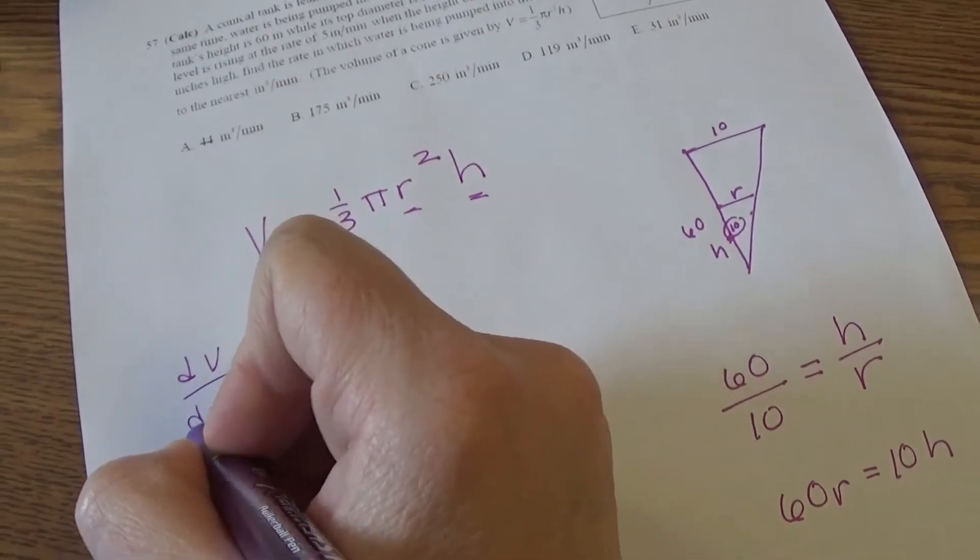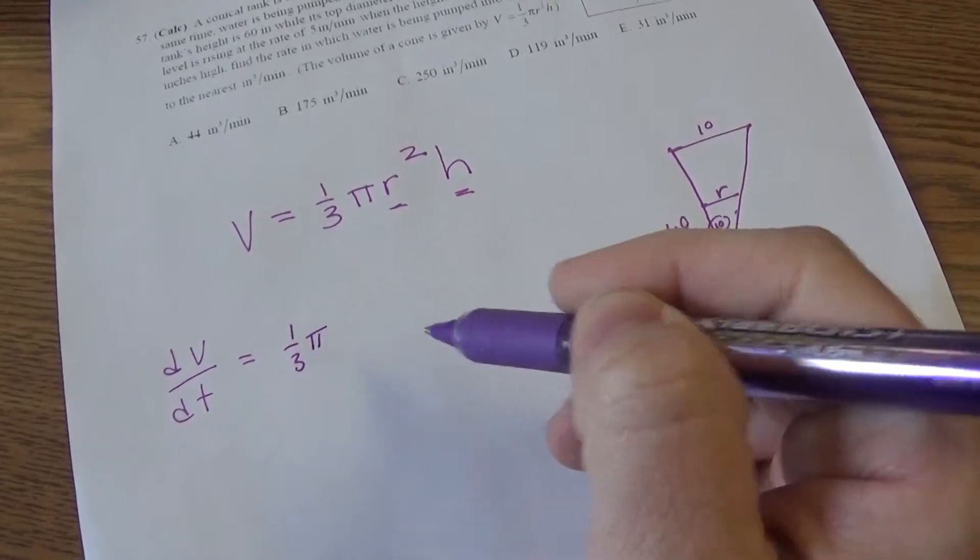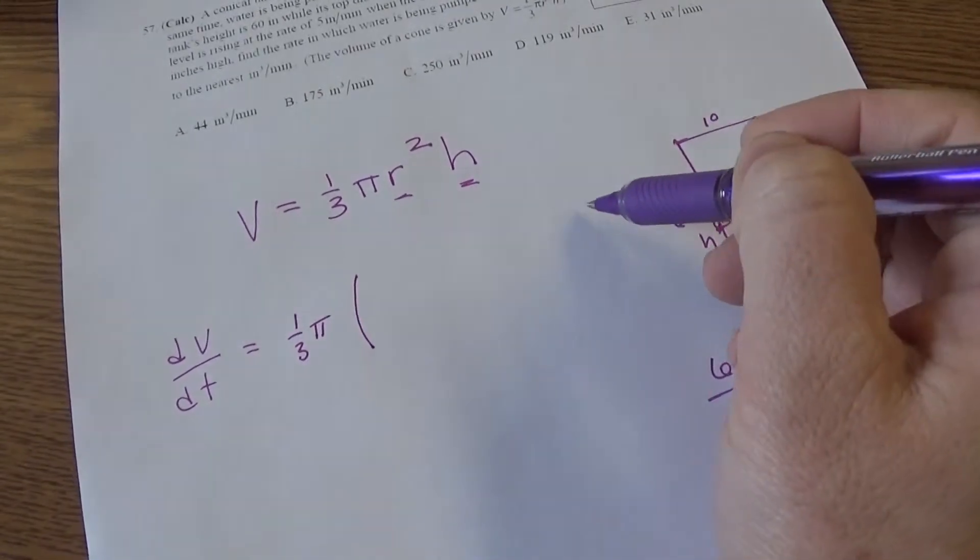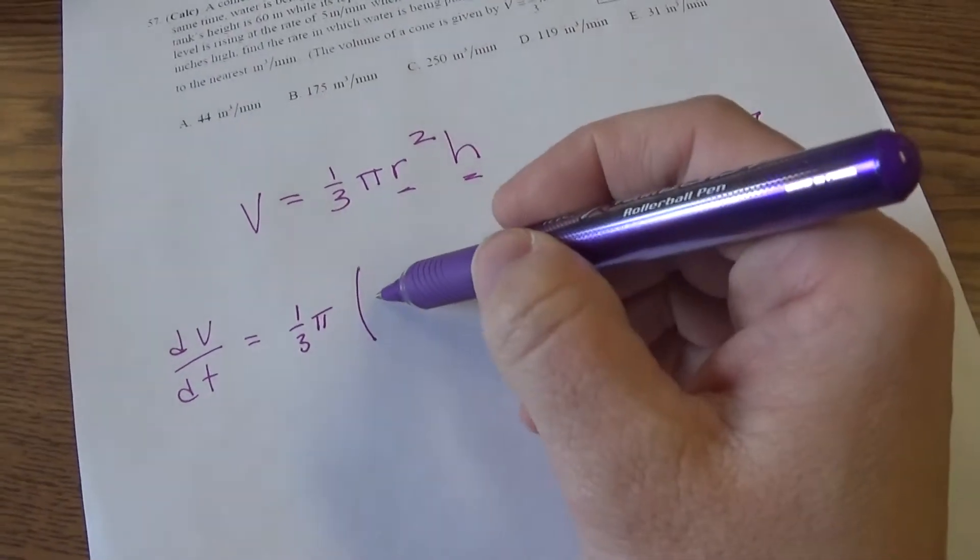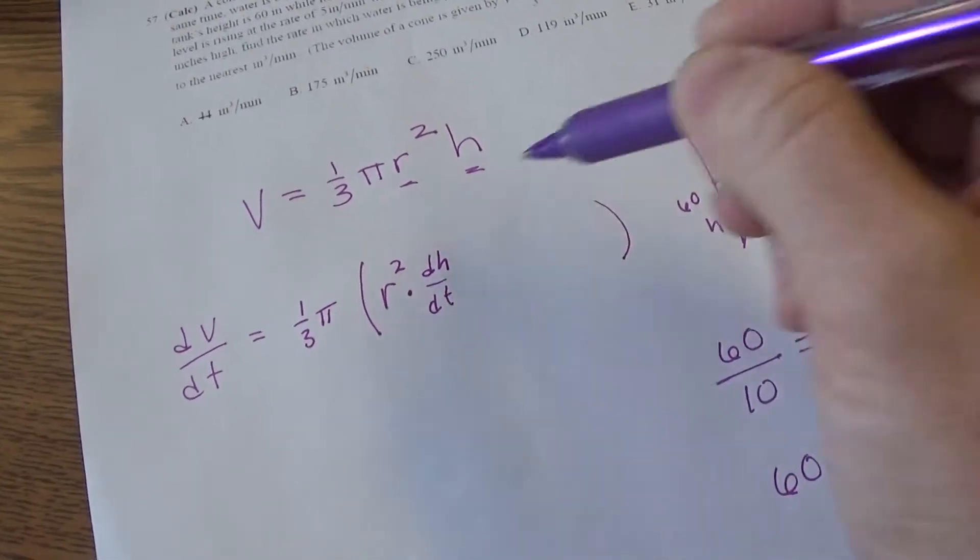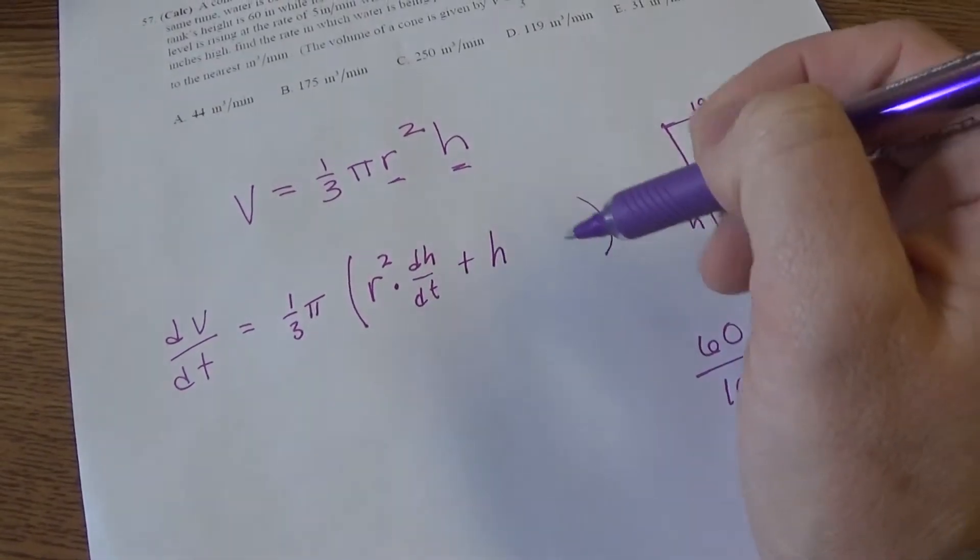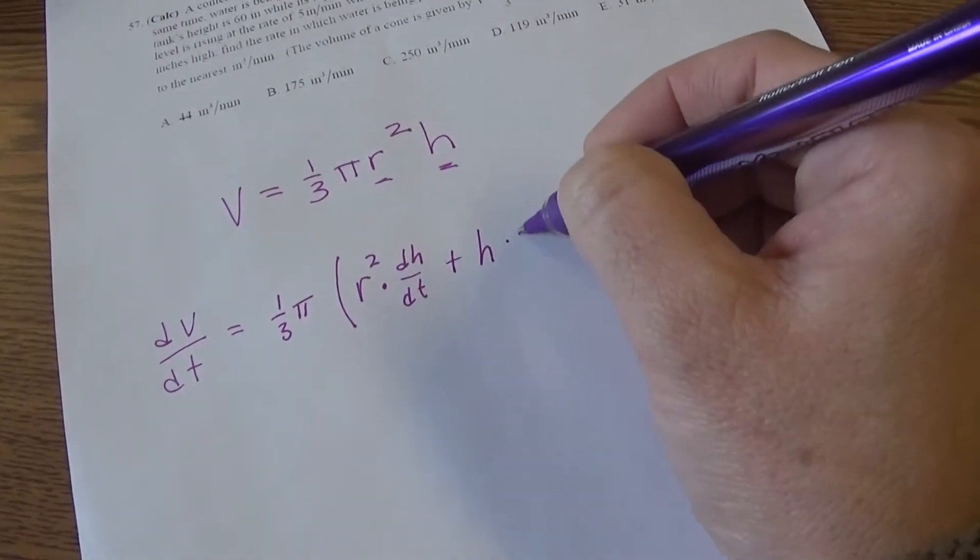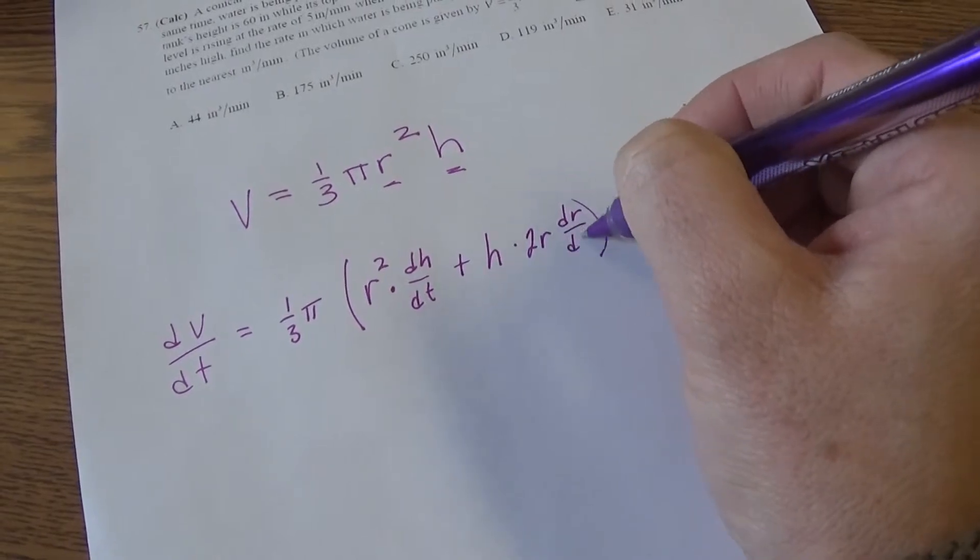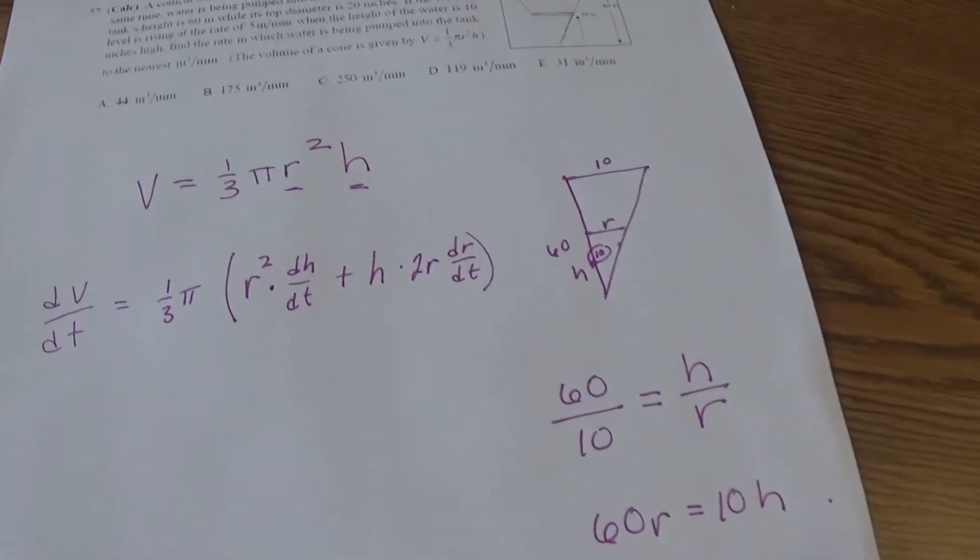What I take note of is that the r is changing and the h is changing. That fact means that we do have to use the product rule. The one-third pi is just going to sit outside the whole time. So it's going to look something like dV/dt equals—I'm just going to leave that one-third pi sitting out front and do the product rule on the remaining part.